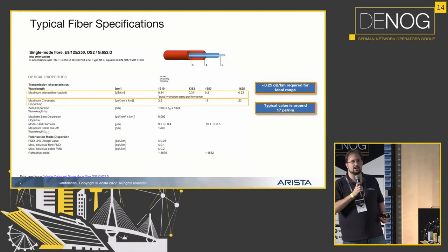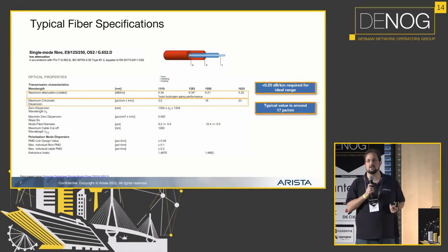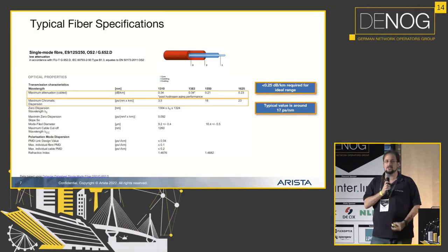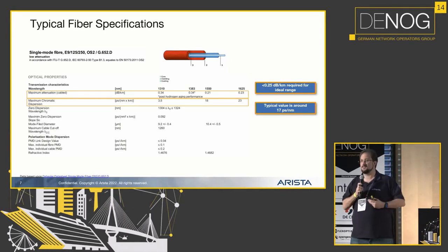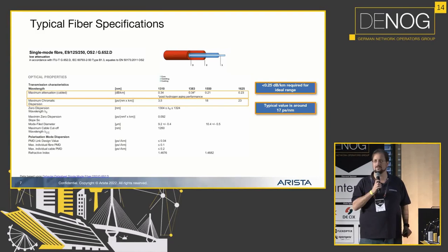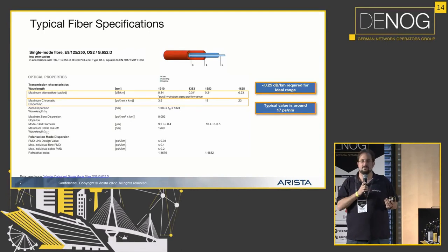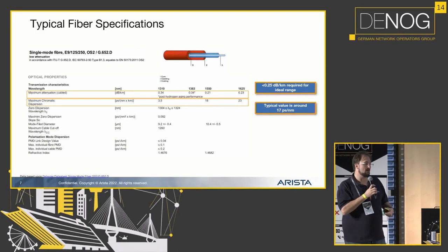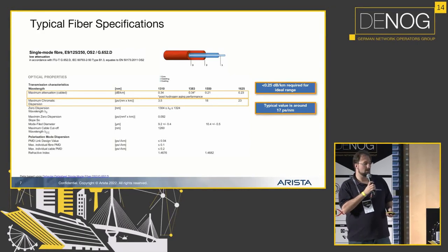When we talk about optics we also talk about fiber. This is the specification of a single-mode fiber OS2. You see the maximum attenuation per kilometer at different wavelengths, and also what chromatic dispersion this fiber has. Ideally you have about 0.5 to 0.25 dB per kilometer on attenuation and about 17 picoseconds per nanometer on chromatic dispersion.